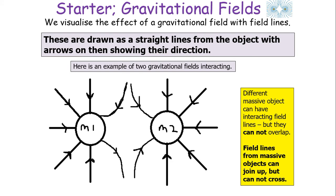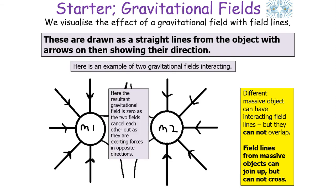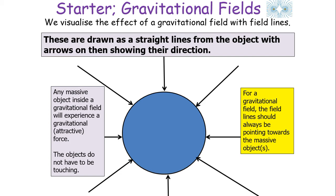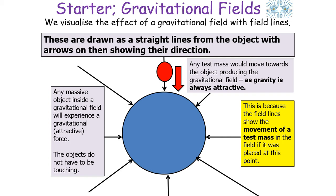Here is an example of two gravitational fields interacting. Interestingly, in the middle there are no field lines, because at that particular point in space the resulting gravitational field is zero — the two fields cancel each other out as there are forces in opposite directions. M1 pulls towards M1 and M2 pulls towards M2, so an object placed there is pulled both ways and the forces cancel out, giving no overall gravitational force.